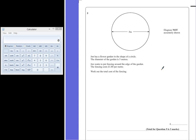Question 5. John has a flower garden in the shape of a circle. The diameter of the garden is 5 metres. John wants to put fencing around the edge of the garden. The fencing costs £1.80 per metre. Work out the total cost of the fencing.